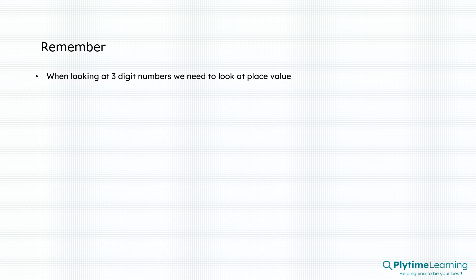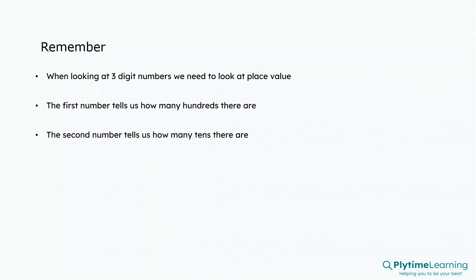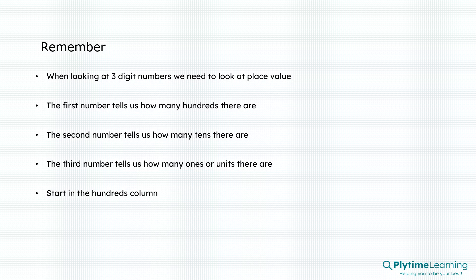Remember, when looking at 3 digit numbers, we need to look at place value. The first number tells us how many hundreds there are. The second number tells us how many tens there are. And the third number tells us how many ones or units there are. Start in the hundreds column with a 3 digit number, and learn the way to write and read the numbers from 10 to 90.